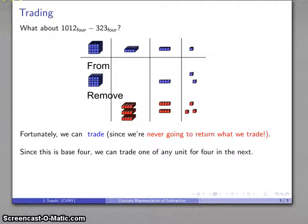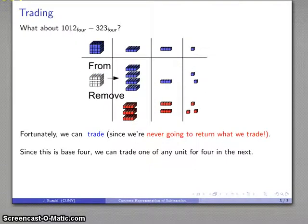So I can trade any unit for 4 of the next. So I'll trade this for 4 of these, and this is gone now, no longer exists. And now I'm in a position to remove 3, because I have 3 I can take away.